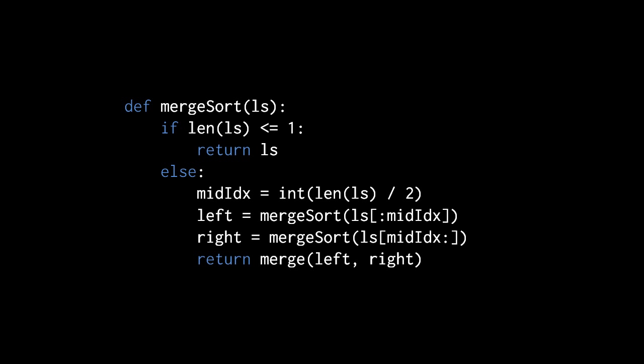If the length of the list is greater than one, then we split that list into two separate lists — a left list and a right list — then recursively sort those two lists with the merge sort function, and then finally use our merge function to merge together those two separately sorted lists, the left and the right. And that's what we return.